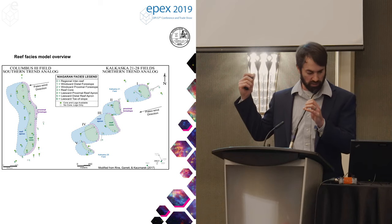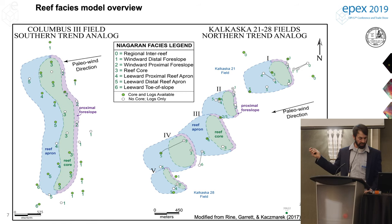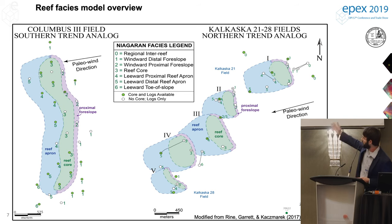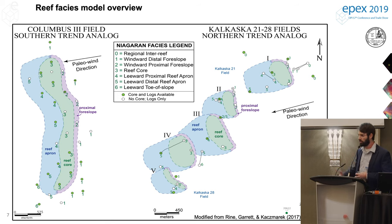I'll talk quickly on how we characterize our Niagaran Pinnacle Reefs in Michigan. We look at logs, we look at nearby wells, and what we'll initially do is come up with thicknesses for each of these wells and give them a number. That number corresponds to a facies or a depositional location — really just bodies of reservoir that share similar properties that we can group together, model, and run simulations on. This is where the geological model starts.